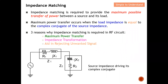Looking at this diagram, this is the source and this is the load. You can see that X1 and X2 are complex conjugates, which means X1 is equal to X2 but they have opposite signs — minus j and plus j. When this occurs, maximum power transfer actually takes place. Later on I'm going to show with an equation why this is the case.